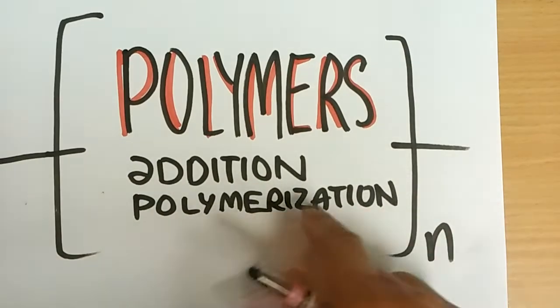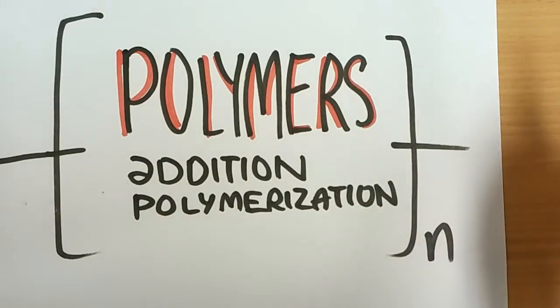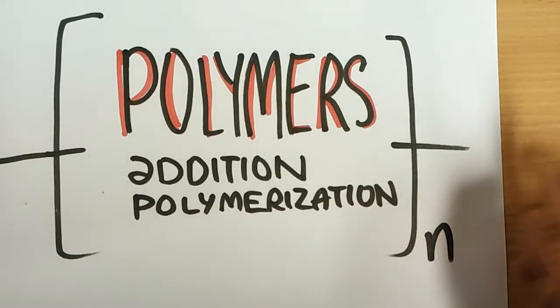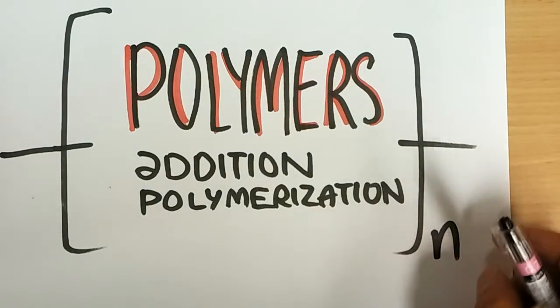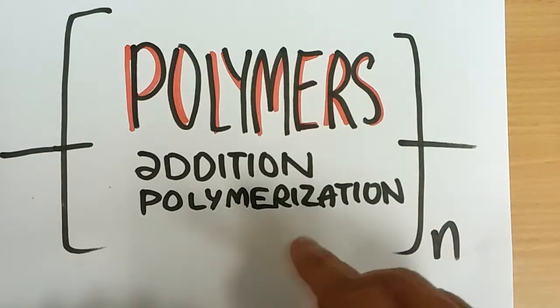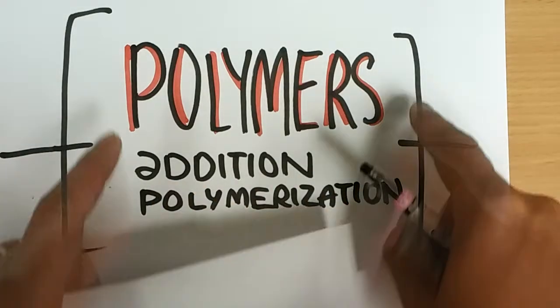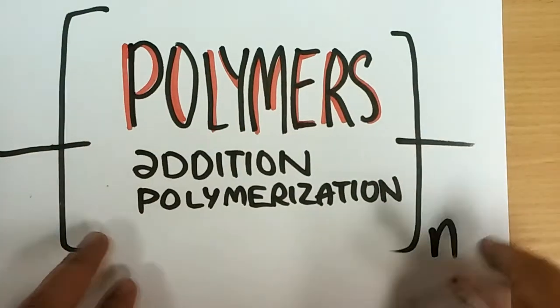This video is on how to write polymers and how we draw polymers based on what we have. The type of polymer we're going to focus on is the addition polymer, which will look like this.